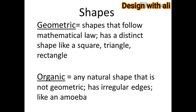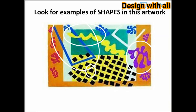Geometric shapes follow mathematical law and have a distinct shape, like a square, triangle, or rectangle. Organic shapes are any natural shape that is not geometric — they have irregular edges, like an amoeba. Look for examples of shapes in this artwork.